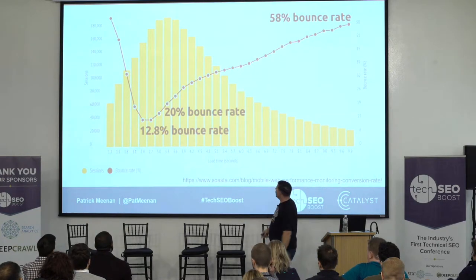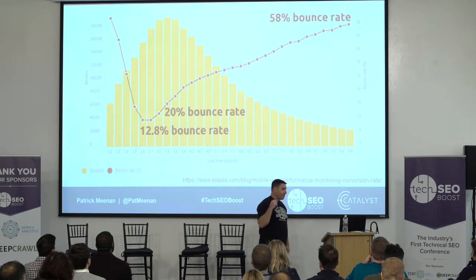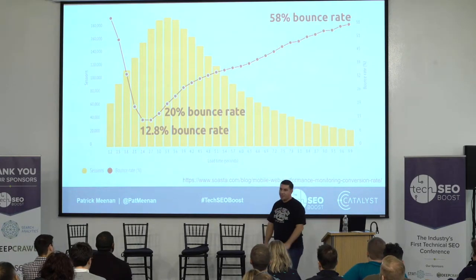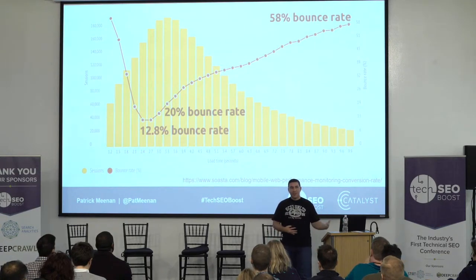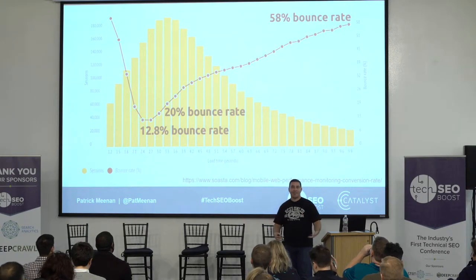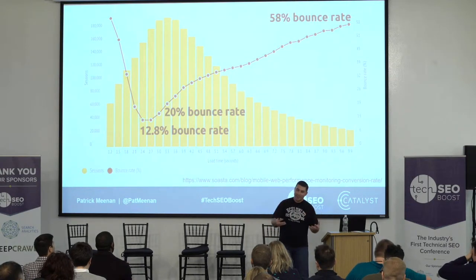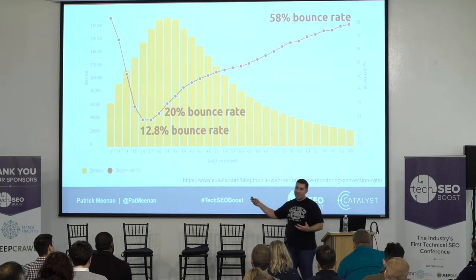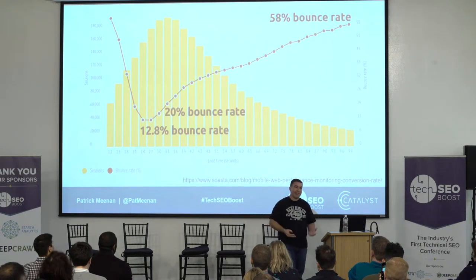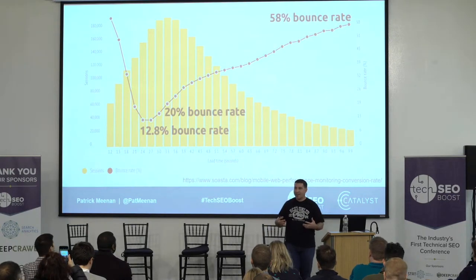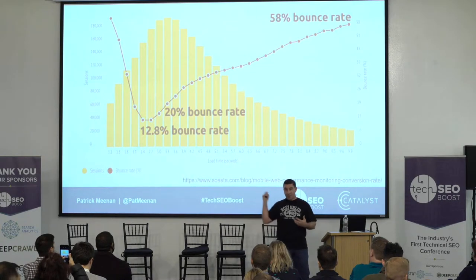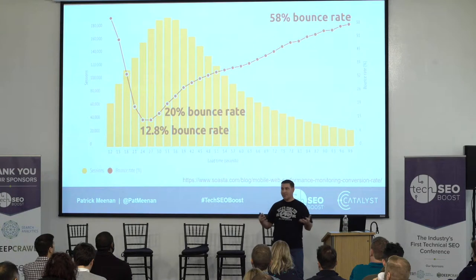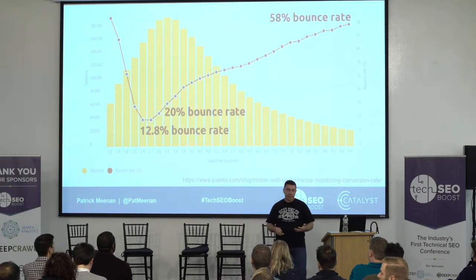Bounce rate is very similar, although it doesn't have the same tail-off. We're talking about going from 12 percent bounce rate all the way up to 58 percent as performance gets slower. Assuming you've got all the content users care about, the ability to drive your bounce rate from 60 percent down to 12 percent just by working on performance and optimization is huge. So when talking to the business about where to invest, performance absolutely should be part of that discussion.